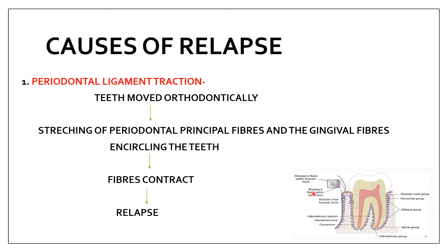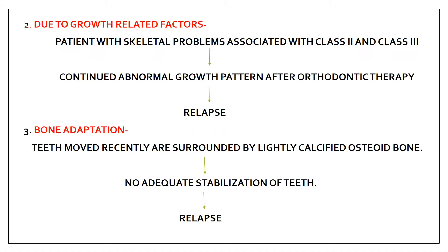Various studies have shown that periodontal fibers reorganize in about four weeks, whereas gingival fibers take around 40 weeks to reorganize. Because of this, after orthodontic treatment you give around four to five months of full-time retention to the patient to prevent this type of relapse.